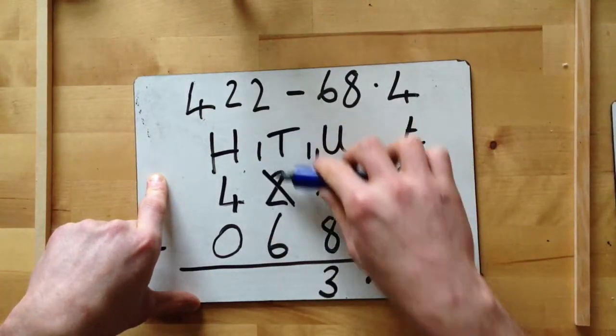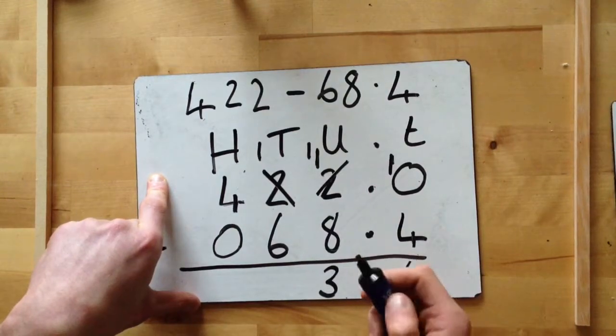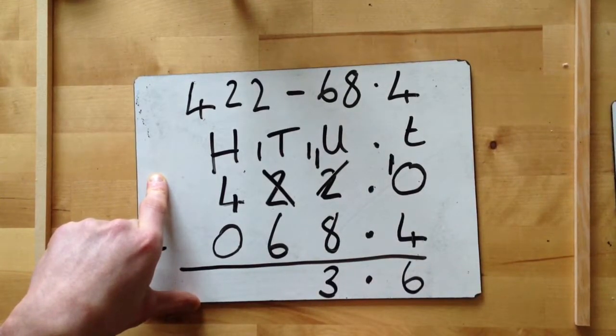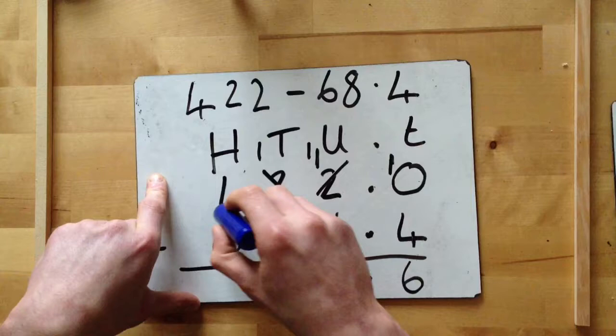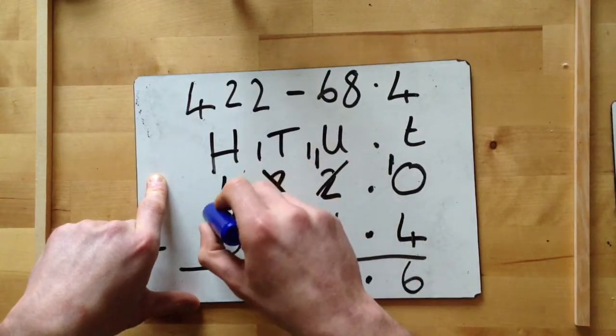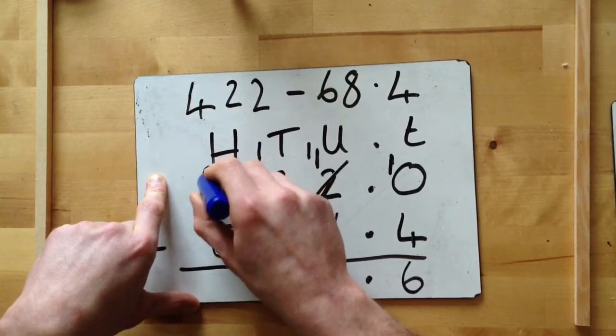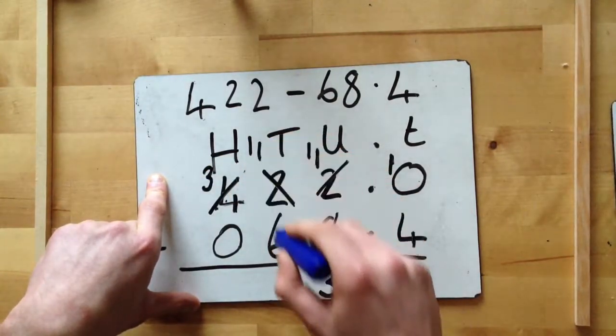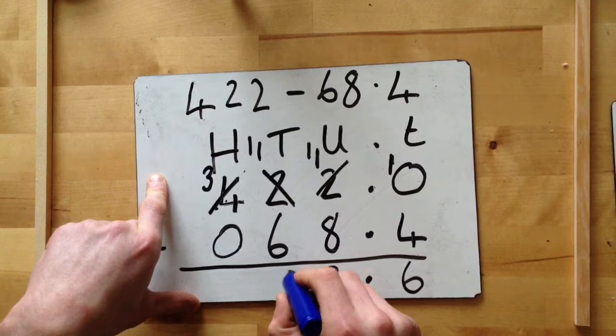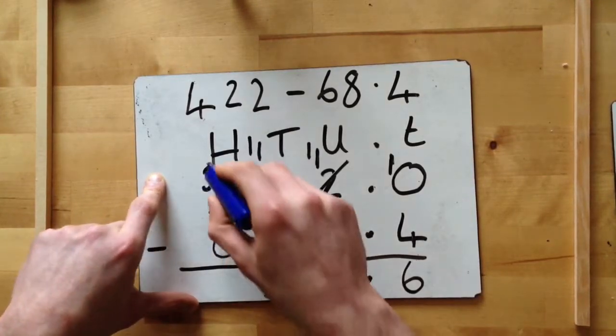Then we look at the third column, tens: one take away six. Again, we have to follow the third rule. We need to borrow because it's smaller. So he looks to the person beside. The four goes, 'Yep, I can lend you one.' So he becomes a three. He's now at eleven. That's eleven take away six, which gives me five.